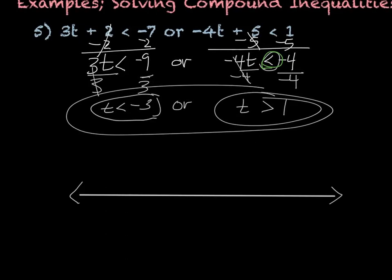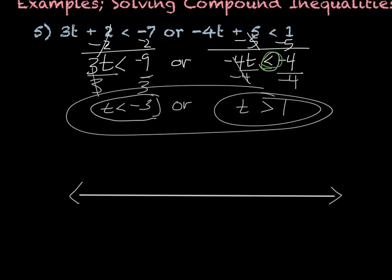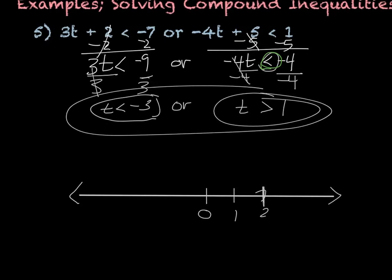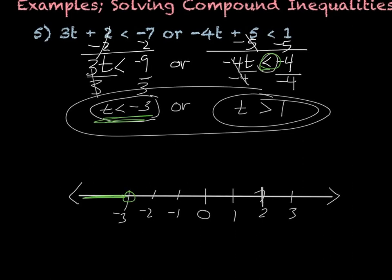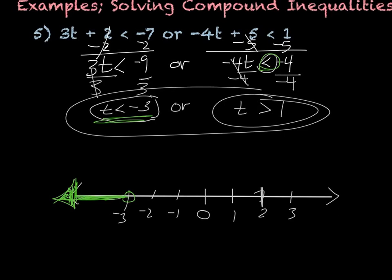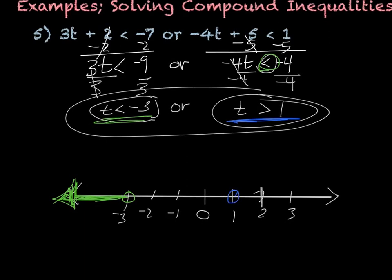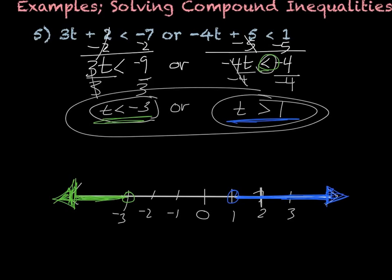For the graph, 0 is roughly in the middle, with 1, 2, 3 on one side and negative 1, negative 2, negative 3 on the other. Graphing t is less than negative 3: open circle on negative 3, going on forever in that direction. For t is greater than 1: open circle on 1, going greater than that. That is your final graph.